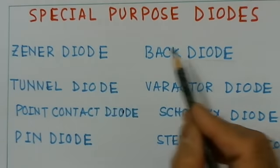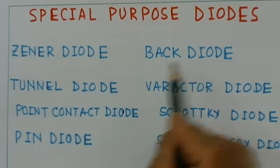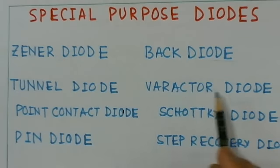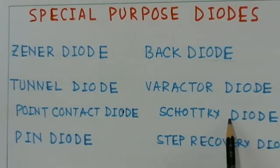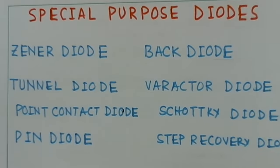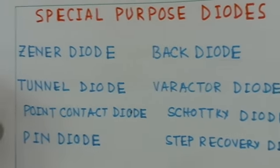The eight diodes are: a Zener diode, a back diode, tunnel diode, varactor diode, point contact diode, Schottky diode, PIN diode, and step recovery diode.